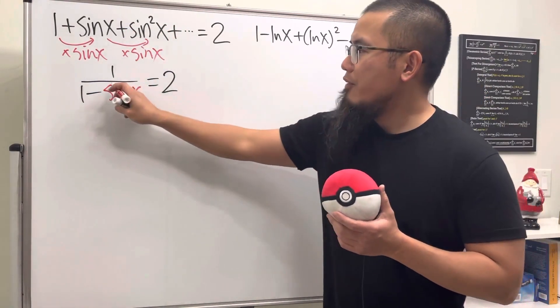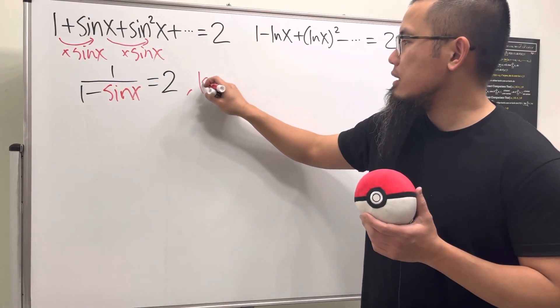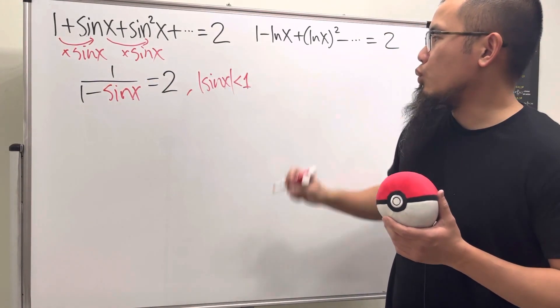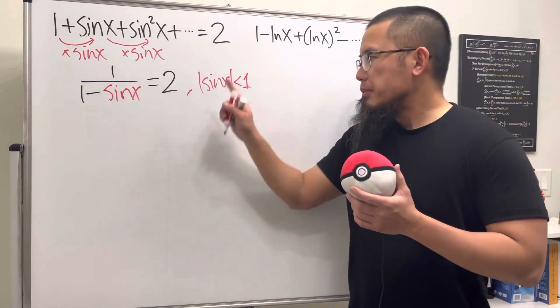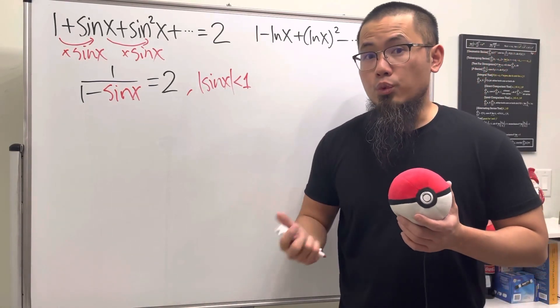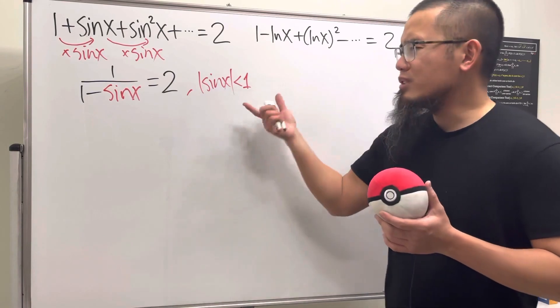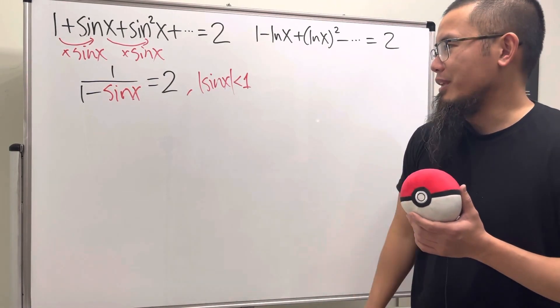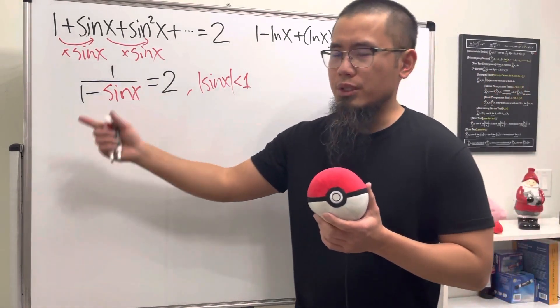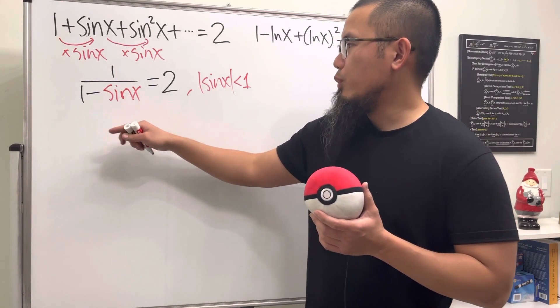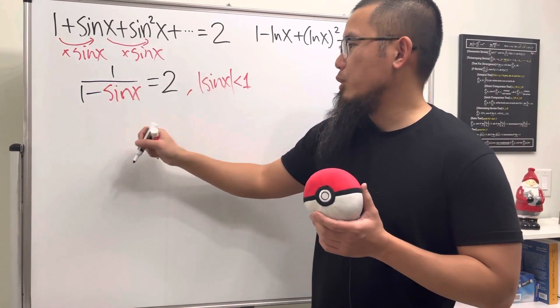But we have to be really careful, because in order for this step to be true, we have to make sure that whatever the value we get for sin x, it has to be strictly less than one. And we know the absolute value of sine is less than or equal to one for any x, so most likely we can solve for the answer right here. Let's just go ahead and do it. You can take the reciprocal on both sides.